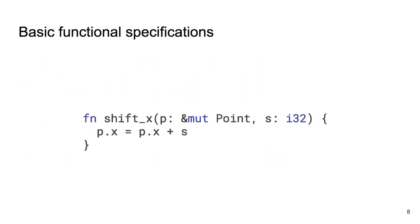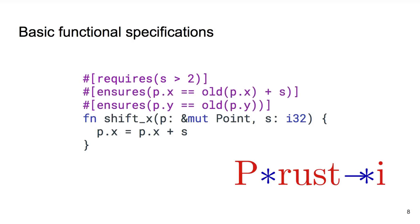As a very quick reminder of prior work in our group, we can verify functional specifications using the Prousty verifier. The concrete syntax uses Rust annotations which start with a hash symbol, followed by the type of the specification, and contain an expression that can use a superset of Rust syntax. Here is an example of a precondition, stating that this function can only be called if the argument s is greater than 2. And here we have a couple of postconditions, stating the relation between the values modified by this function and their original, old values.